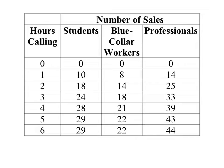The problem says that a life insurance salesman spends nine hours a week on telephone soliciting new clients. From past experience, the salesman estimates that each hour spent calling students, blue-collar workers, and professionals will produce the following number of sales, given to us in the table. We are to determine how the salesman should allocate his nine-hour budget in order to maximize the number of sales.